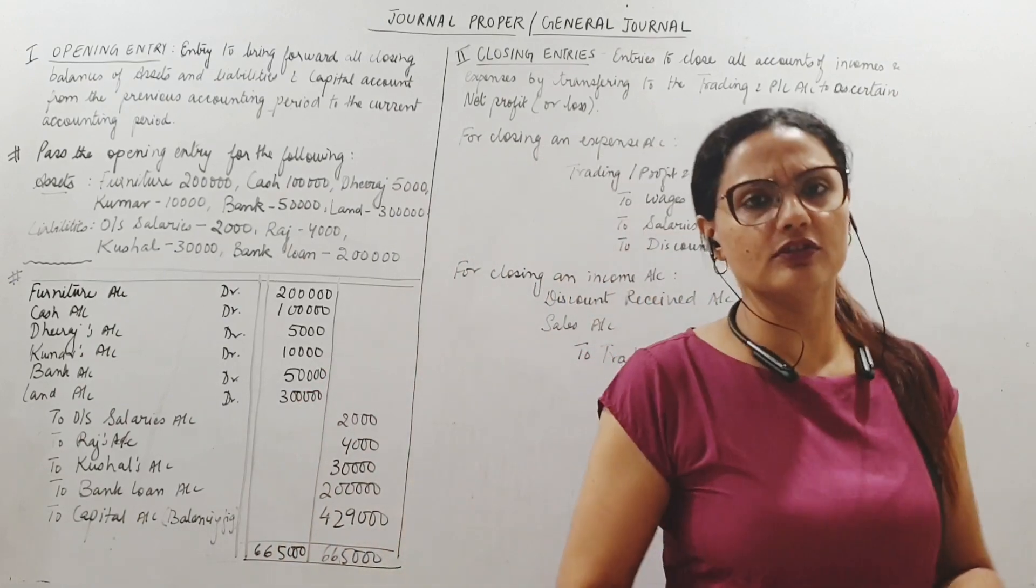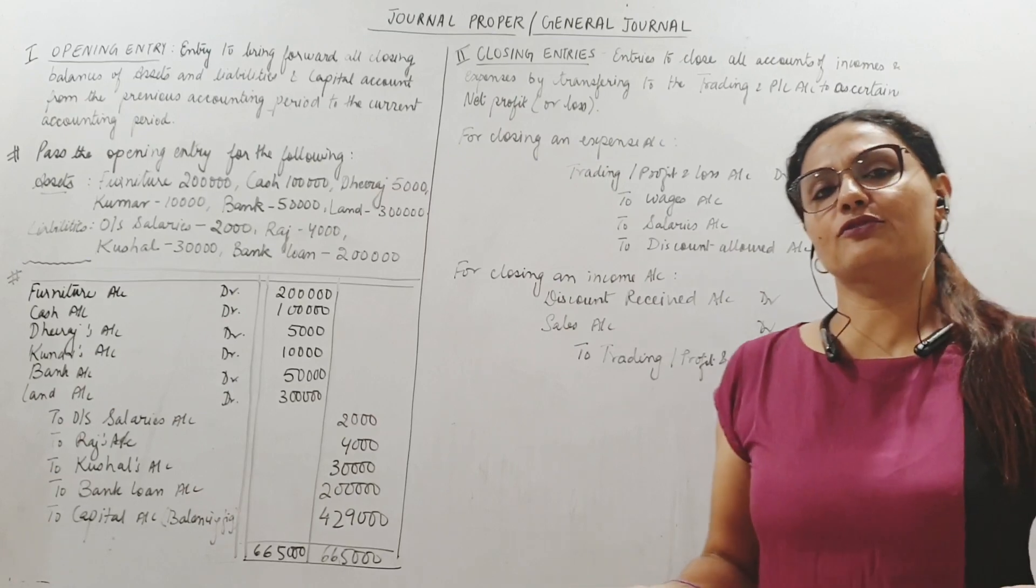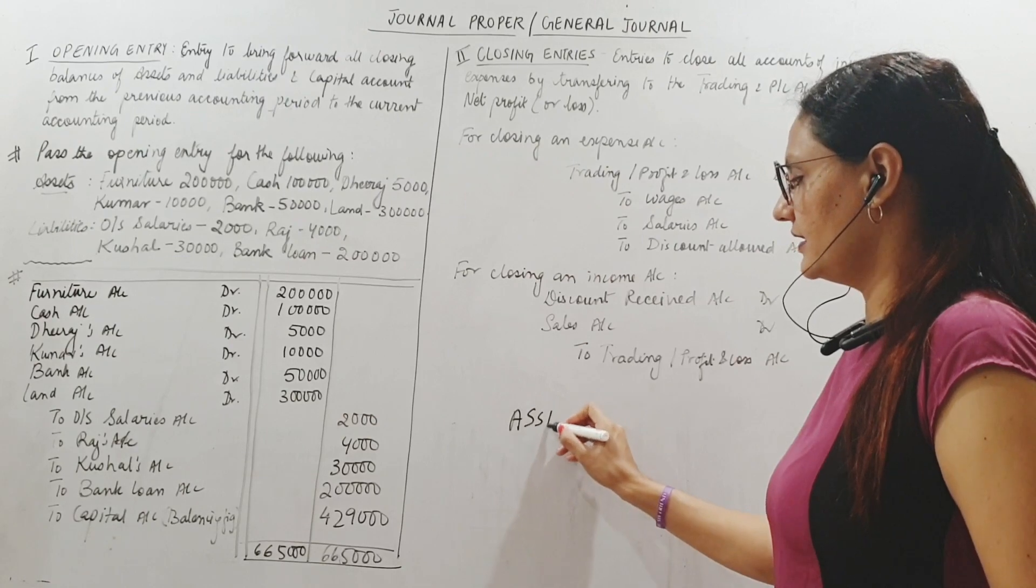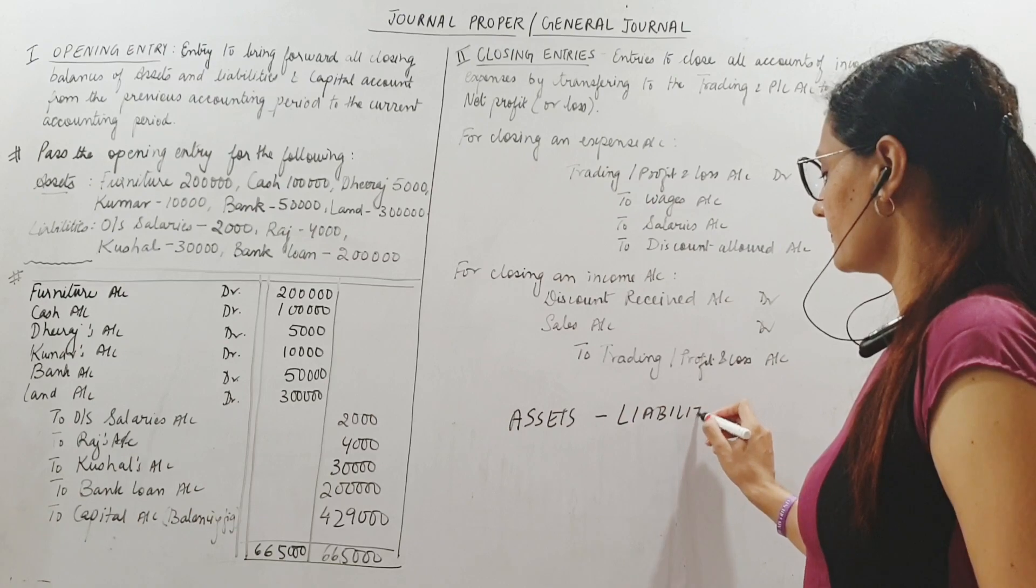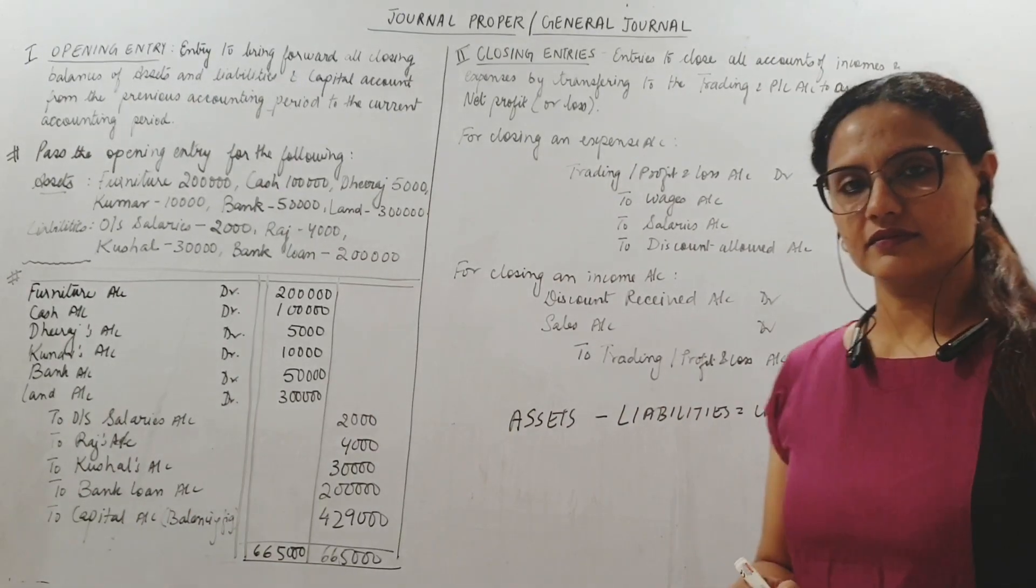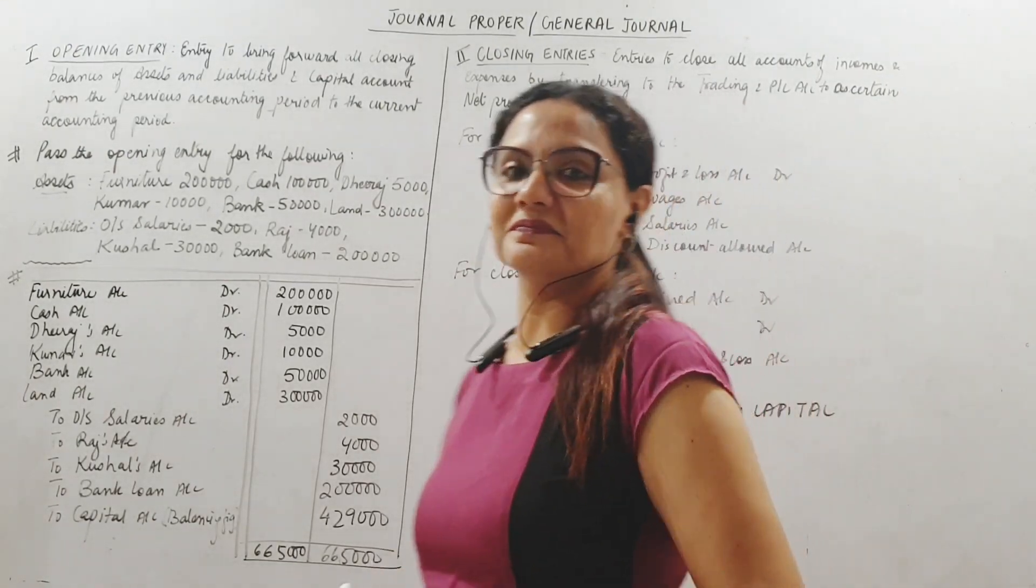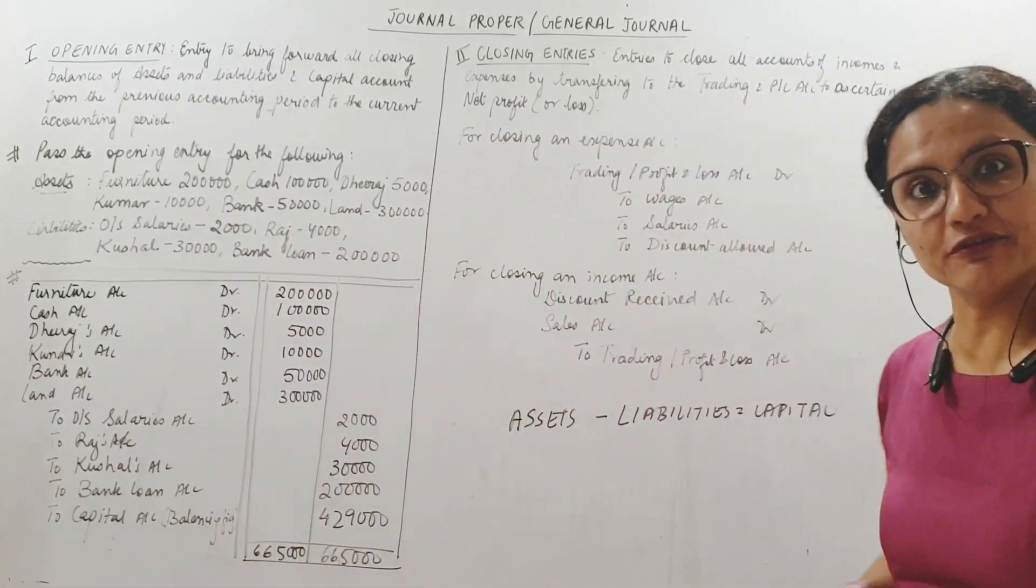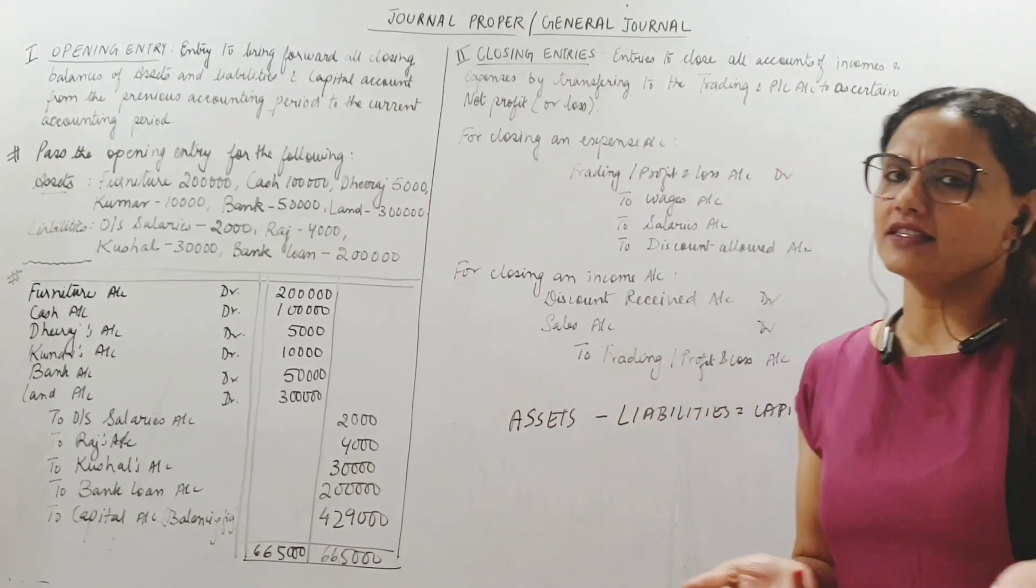I cannot see capital anywhere here because capital account will also be there. In some sums you will not be given the capital account, but it is so easy to find it out because we know the accounting equation. Assets minus liabilities is equal to capital. You know this accounting equation from when we were doing the basic accounting terms. Assets and liabilities are given to us, so we can find capital.